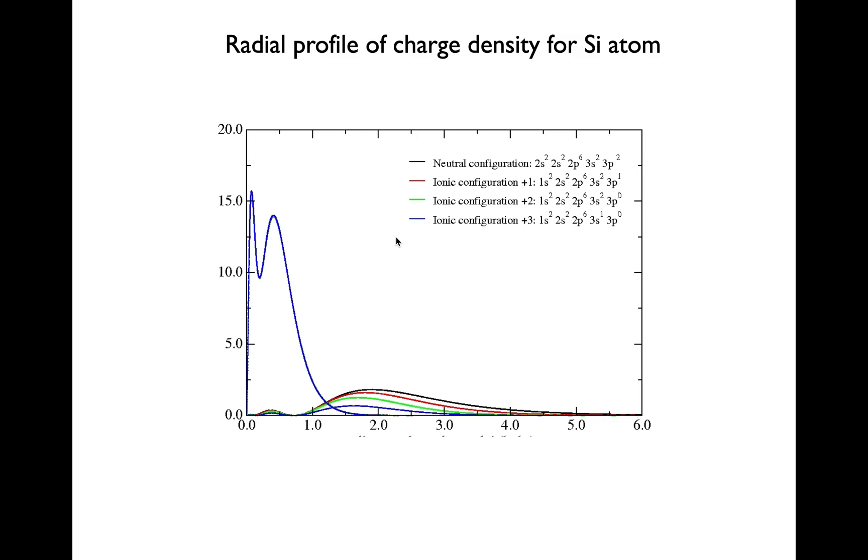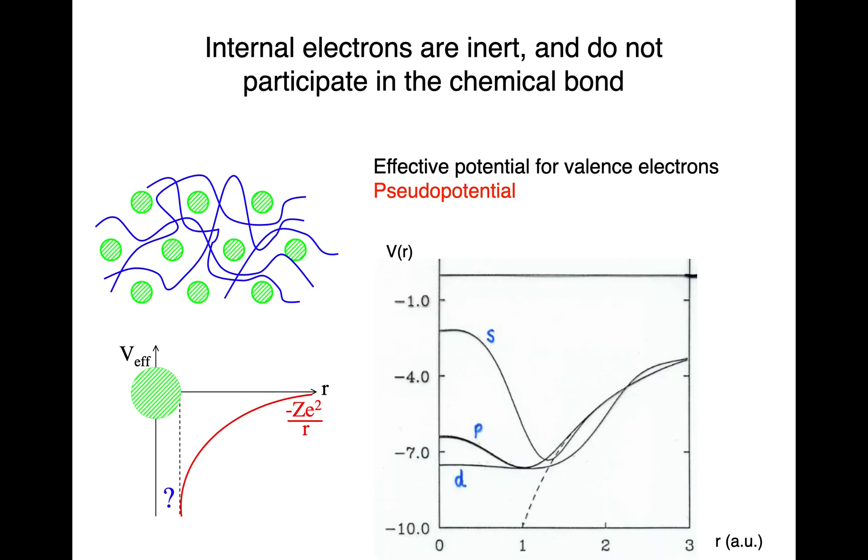So, if the core electrons don't notice the big change in 3+ ionization, they are not going to notice the changes happening when the atom gets bonded to the neighbors. Summarizing this idea, we can say that internal electrons are inert and do not participate in the chemical bond. So, this is the idea of the pseudopotential in a nutshell.